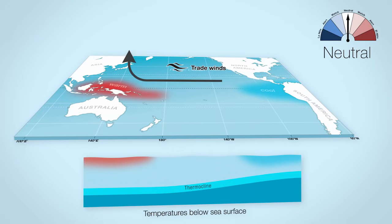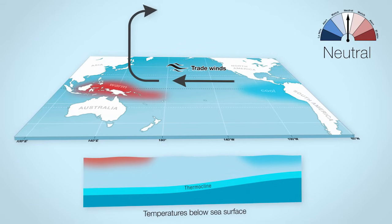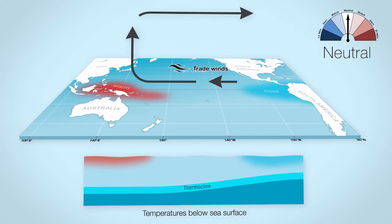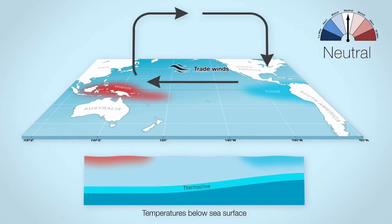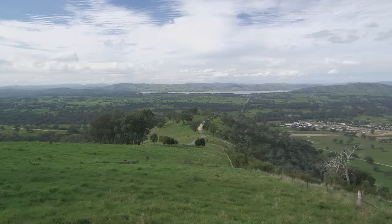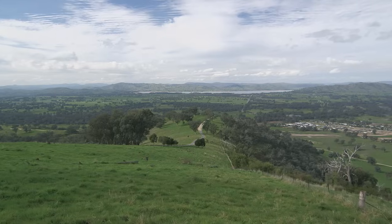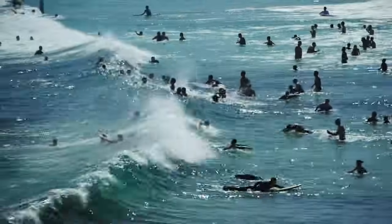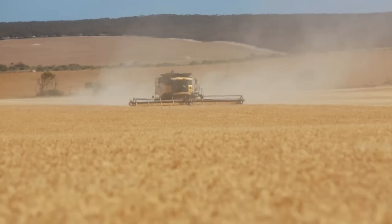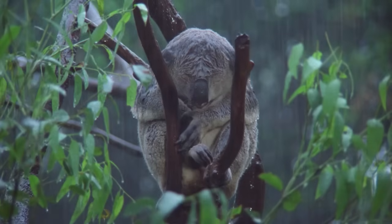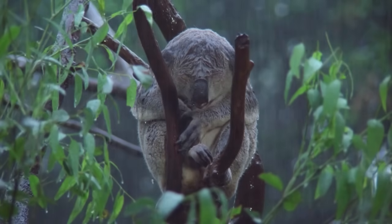The temperature difference across the tropical Pacific Ocean causes air to rise to Australia's north and descend near South America. This creates a huge connected cycle called the Walker Circulation. We consider neutral to be the normal phase because we're in this state more than half of the time. While a neutral phase may bring more normal weather to Australia, droughts and floods are certainly still possible.